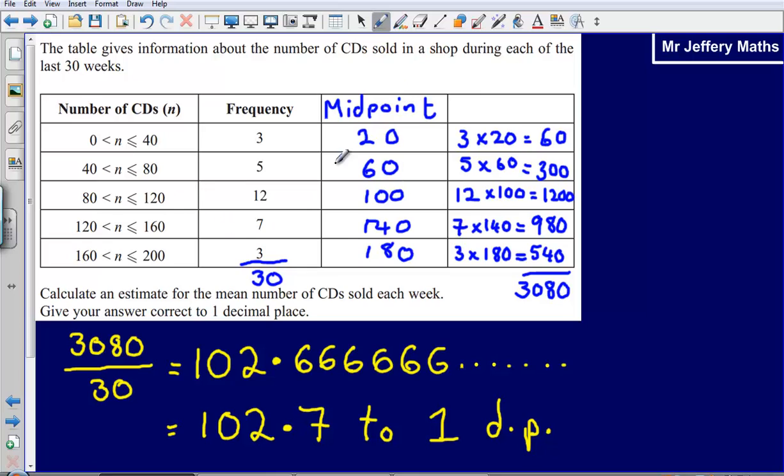So what we've done, we've calculated our midpoints, multiplied our midpoint by our frequency, totaled these up, and then divided by the total frequency.